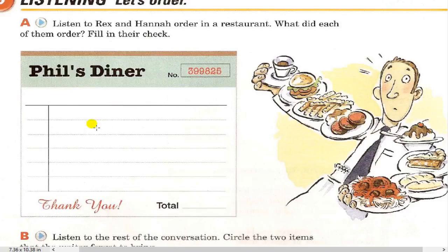Waiter: Hi, may I take your order? Rex: Yes, I'll have a cup of coffee — cream and sugar, please. Hannah: I'd like a chicken sandwich, and I'll have some chips. Actually, you call them french fries here. I'll have some french fries, please. Waiter: One coffee with cream and sugar and a chicken sandwich with french fries. Anything else? Hannah: Yes, I'd like an iced tea, please. Rex: What kind of desserts do you have? Waiter: We have pie, cake, ice cream, chocolate mousse. Rex: What kind of pie? Waiter: Apple, cherry, lemon. Rex: I'll have a piece of apple pie with my coffee. Hannah: Maybe I'll have a piece later — or I'll have some of yours. Waiter: One coffee, one apple pie, one chicken sandwich, french fries, and an iced tea. Right? Rex: Yes. Thank you.